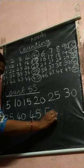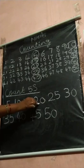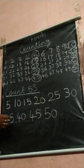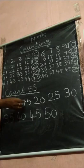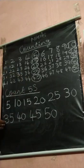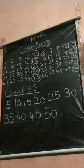Five's count: five, ten, fifteen, twenty, twenty-five, thirty, thirty-five, forty, forty-five, fifty. Say children, five count: five, ten, fifteen, twenty, twenty-five, thirty, thirty-five, forty, forty-five, fifty. All of them understood, children. Five count.